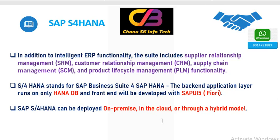It includes Supply Relationship Management, Customer Relationship Management, Supply Chain Management, and Product Lifecycle Management. S4 HANA is ERP software because it is integrated with different modules like MM, SD, PP, and HR. SAP S4 HANA can be run on-premise, cloud, and hybrid.